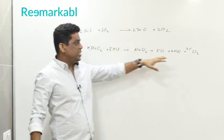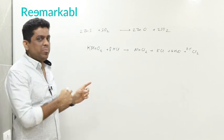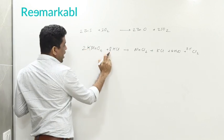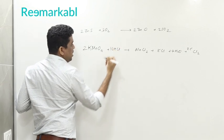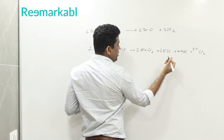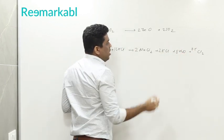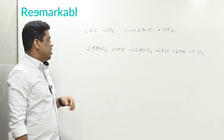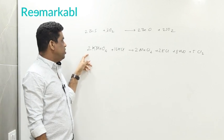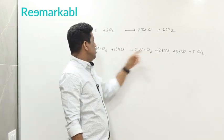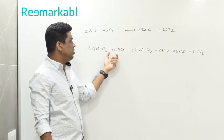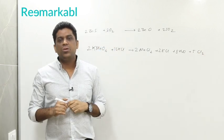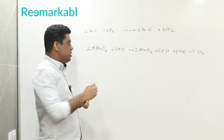Since we cannot use fractions, multiply the whole equation by two: 2 KMnO₄ + 16 HCl → 2 MnCl₂ + 2 KCl + 8 H₂O + 5 Cl₂. Check: potassium — 2 on each side. Manganese — 2 on each side. Oxygen: 4 times 2 is 8 on each side. Hydrogen: 16 on each side. Chlorine: 4 plus 2 is 6, plus 10 is 16 on each side. The equation is balanced — this is one of the most difficult in your exercise.